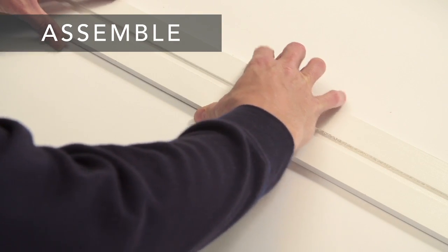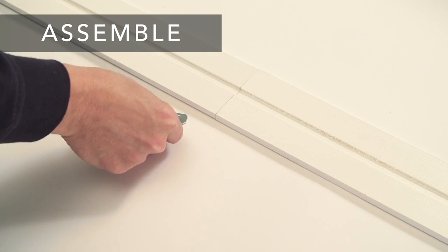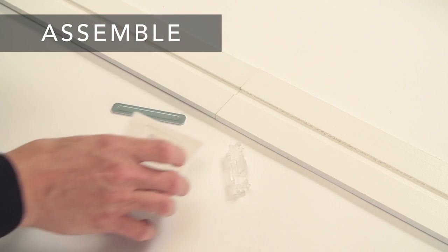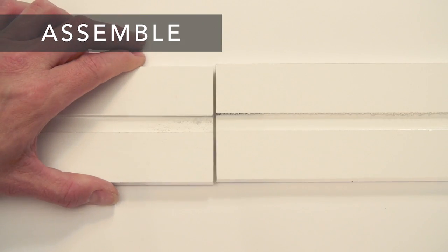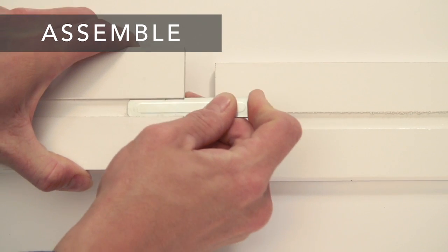Spliced valances require a splice plate to hold the pieces together. Some valances have two grooves and may require two splice plates. If your valance requires splice plates, insert one end of a splice plate into a valance piece.